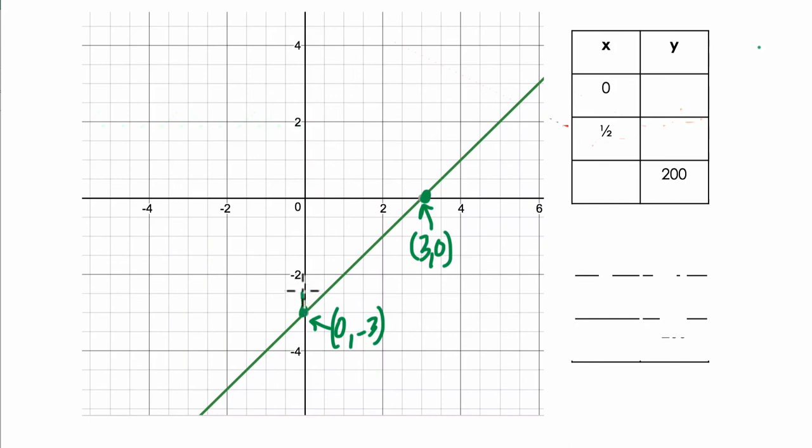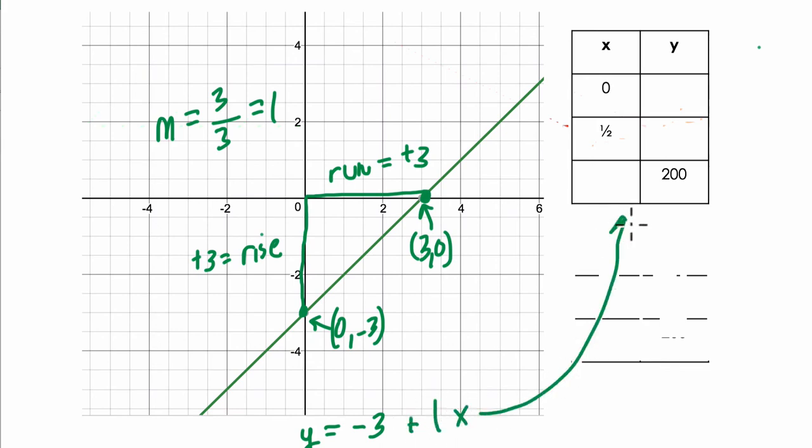If I had to label my slope, I would label it like this. My rise is this number. It's going from negative 3 to 0, so positive 3 equals the rise. And then the run is also going to equal positive 3. So I'm labeling everything, and my slope, m, is 3 over 3, or 1. Now I can use this information to write the equation. Y equals negative 3, our y-intercept, plus 1x. And I can use that equation to fill out this table.